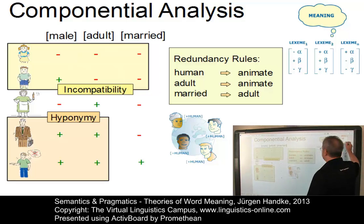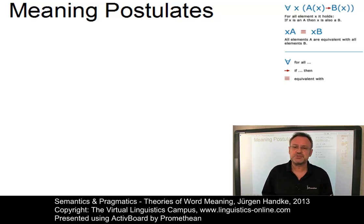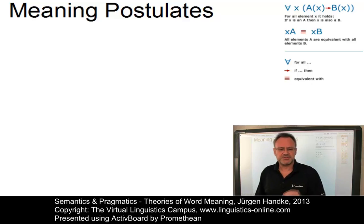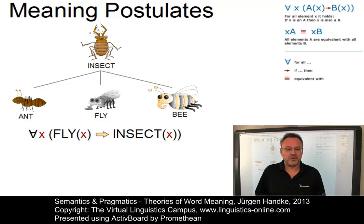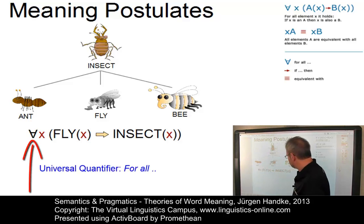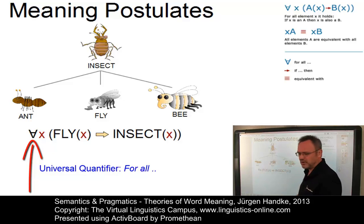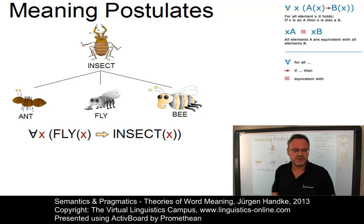An alternative to componential analysis specifies word meaning in terms of so-called meaning postulates: expressions that can be seen as explicit generalizations of relations of hyponymy. Meaning postulates define sense relations by means of logical formulas. The fact that all flies are insects is shown by a formula where the upside-down A stands for the universal quantifier in logic, meaning 'for all something holds'. So the formula can be read: for all items X it holds, if X is a fly, then X is also an insect.